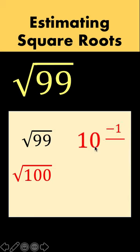And we double 10 to get 20. And then simplify 10 minus 1 over 20, that gives us 9.95.